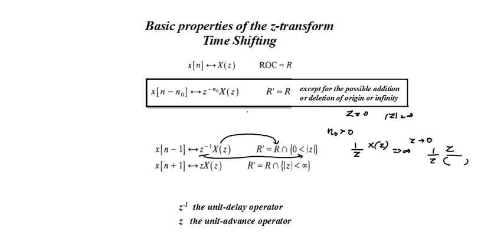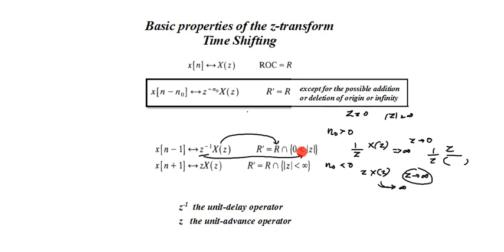When N₀ is negative, the new term becomes Z into X(Z). Here Z is raised to plus 1. If Z is tending to infinity, the entire term goes to infinity, so we cannot consider Z equal to infinity. That is why it is written as less than infinity. We need to write the ROC as modulus of Z greater than 0 — not greater than or equal to — because we cannot consider Z equal to 0, and we also cannot consider Z equal to infinity.